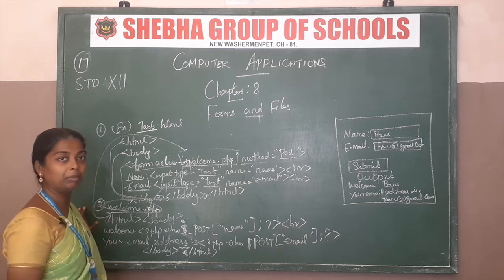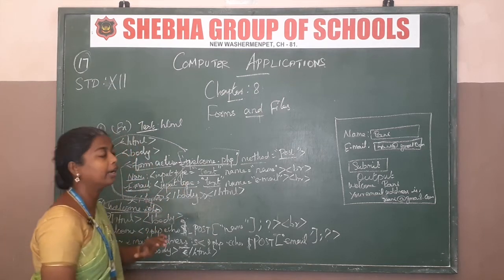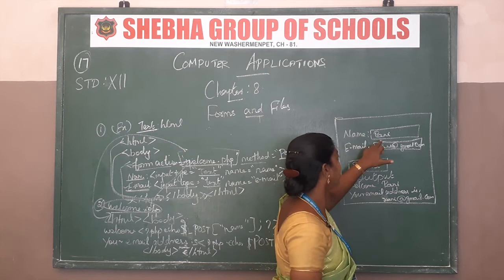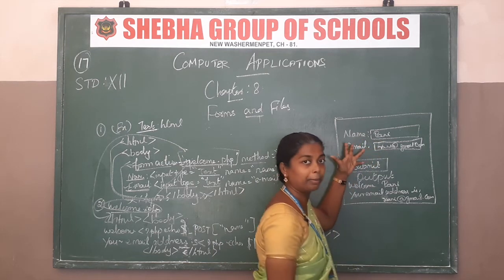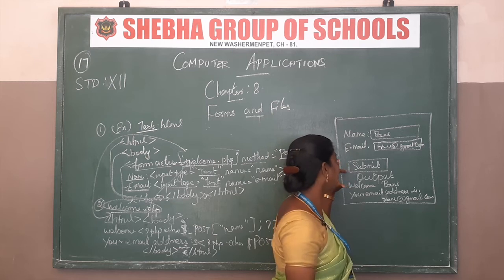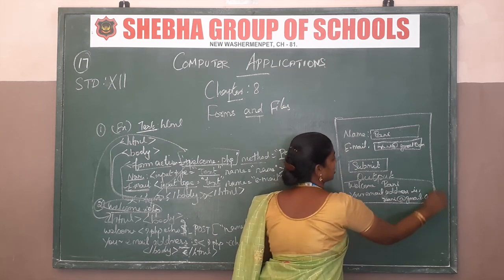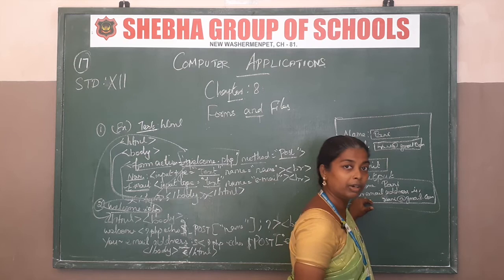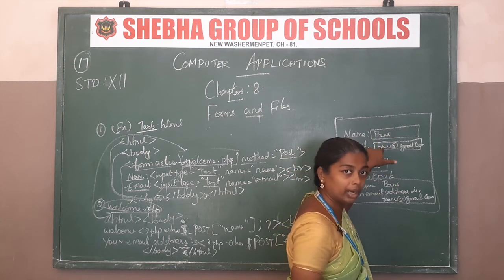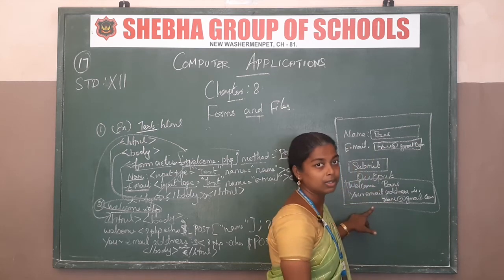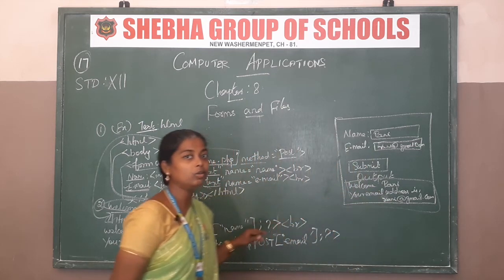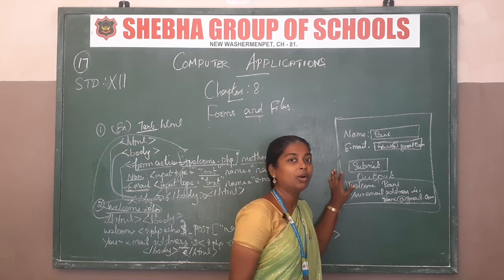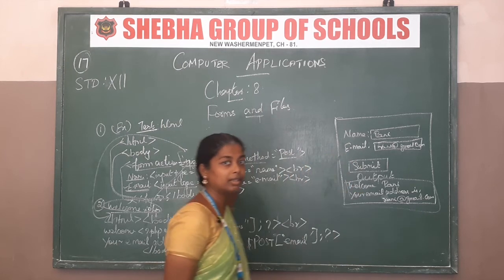This is the output for this program. Output shows: name label, then text box, then email text box. You write the name and email ID, then click the submit button. It will display two sentences: 'Welcome, [name]' and 'Your email address is [email]' — displaying what the user typed.